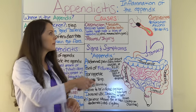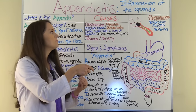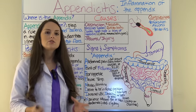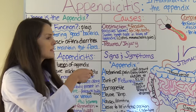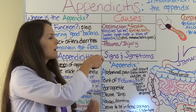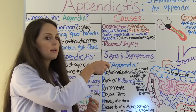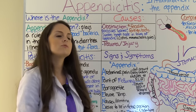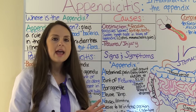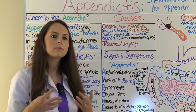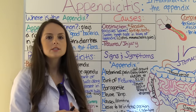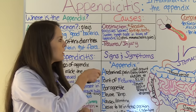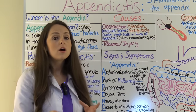When it ruptures it can lead to complications such as perforation, which leads to an abscess, then peritonitis, and if not treated, shock and eventually death. Other things that can cause a blockage include parasites like worms, a foreign body the person ingested, or swollen lymph nodes in the lining of the appendix. If they become too enlarged — especially from constant viral or bacterial infections, Crohn's disease, mononucleosis, or gastroenteritis — it can cause an obstruction.